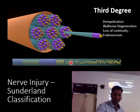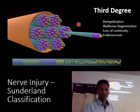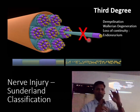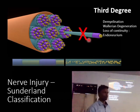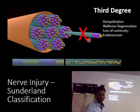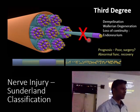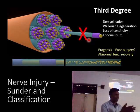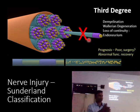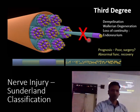In third degree injury, there is demyelination, Wallerian degeneration, and loss of continuity of the endoneurium. The epineurium and perineurium remain intact, but the endoneurium and axon are totally cut, which can result from stretching or blunt trauma. Because the endoneurium is not intact, the regenerating axon has no guide and the prognosis is poor.